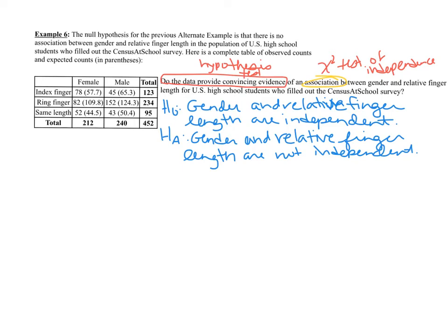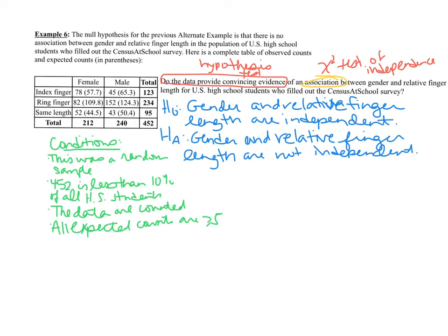Let's go ahead and do our conditions. The conditions are almost the same as the previous two things. You'll notice that for the 10% condition, I only checked it once for 452, because this is only one sample. Because all the conditions are satisfied, we are going to use a chi-squared test of independence.